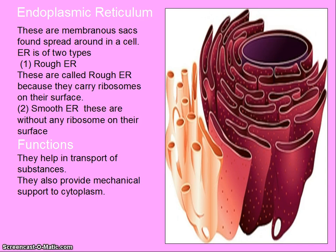Endoplasmic reticulum. These are membranous sacs found spread around a cell. Endoplasmic reticulum is of two types: rough endoplasmic reticulum and smooth endoplasmic reticulum. Rough endoplasmic reticulum carries ribosomes on the surface, while smooth endoplasmic reticulum has no ribosomes on the surface. Functions: they help in transport of materials or substances, and they also provide mechanical support to the cytoplasm.